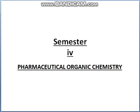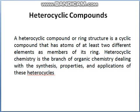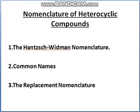Namaste. Today's topic is heterocyclic compounds. Heterocyclic compounds are cyclic compounds with a ring containing carbon and other elements, the common ones being oxygen, nitrogen, and sulfur. The simplest five-membered heterocyclic compounds are pyrrole, furan, and thiophene, each containing a single heteroatom. A heterocyclic compound is a cyclic compound that has atoms of at least two different elements as members of its ring. Heterocyclic chemistry is a branch of organic chemistry dealing with the synthesis, properties, and applications of these heterocycles.